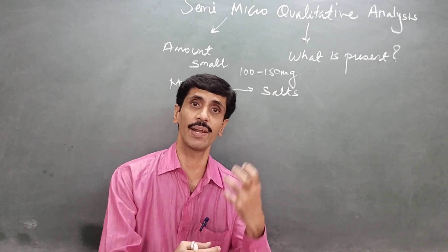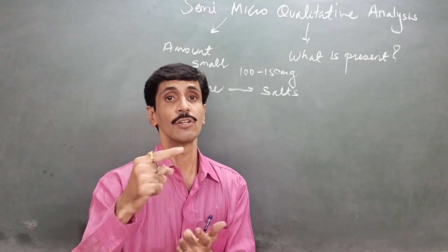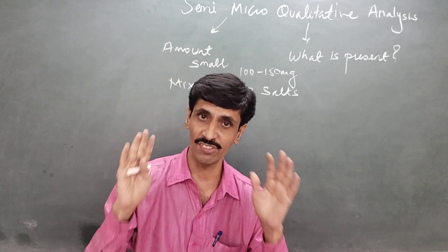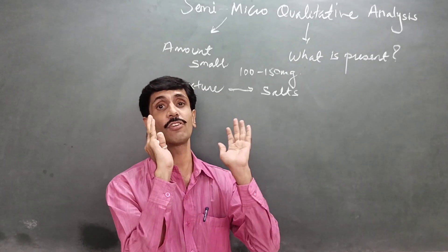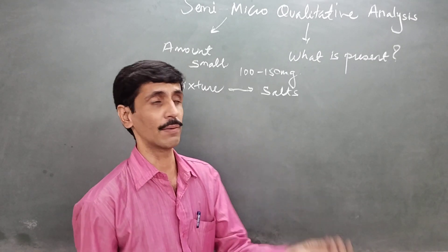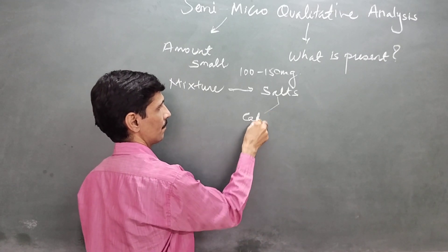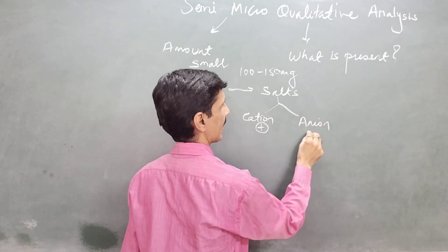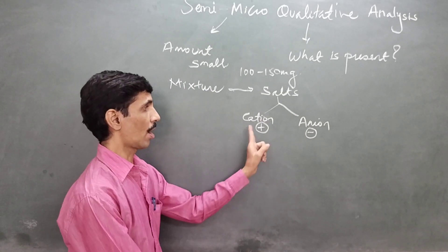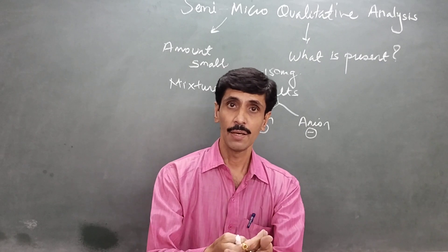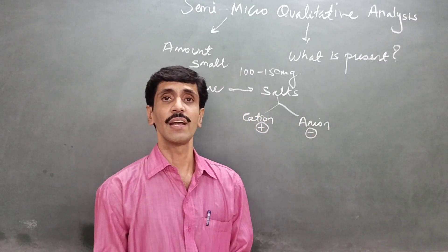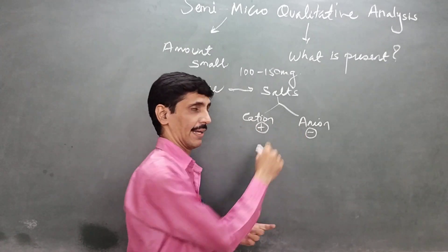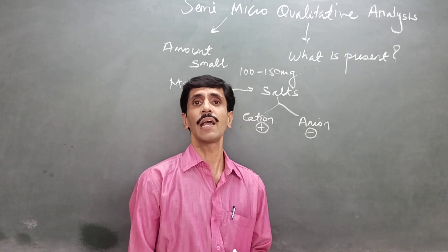The next question is: what do we mean by salts? Generally speaking — and there are exceptional cases — a salt is made up of a cation, that is a positively charged ion, and an anion, which is a negatively charged ion. The combination of positive and negative charges produces a force of attraction, and that gives you a compound called a salt. Because it involves ions, we say salts are generally ionic in nature.